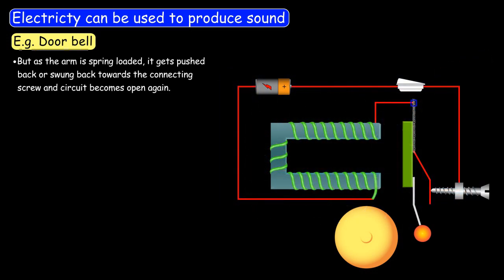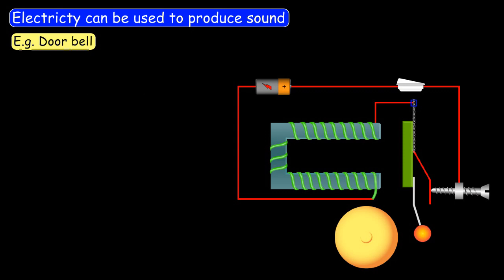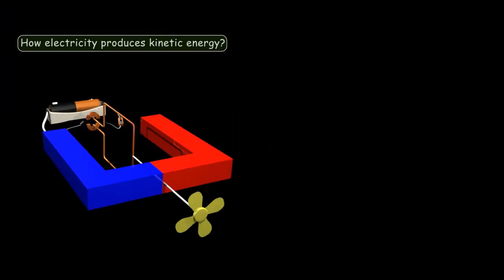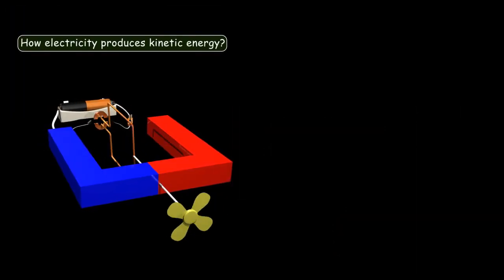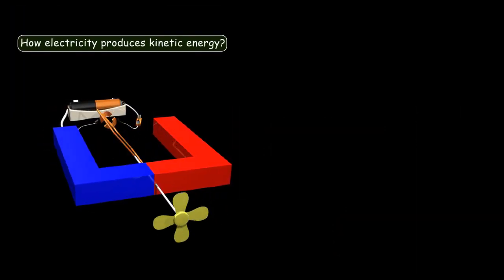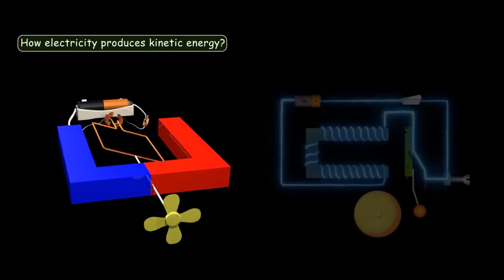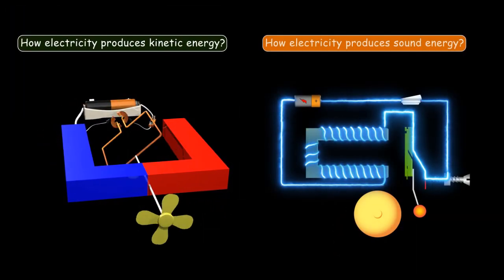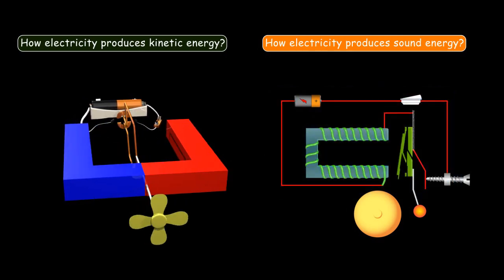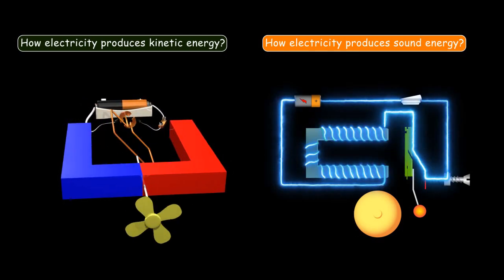This was so interesting — how the electromagnet is used to produce sound. So friends, we learned how electricity produces motion or kinetic energy, and how electricity produces sound energy.